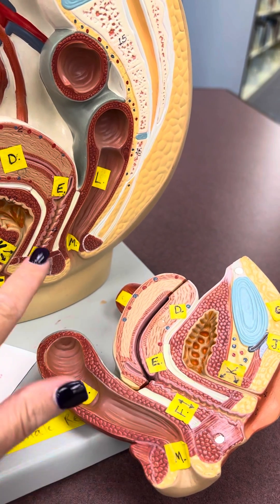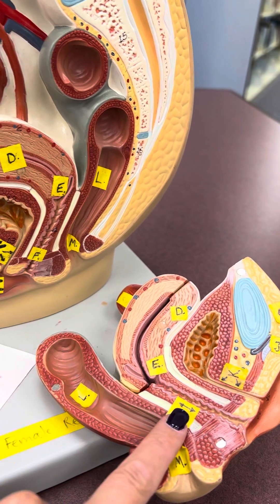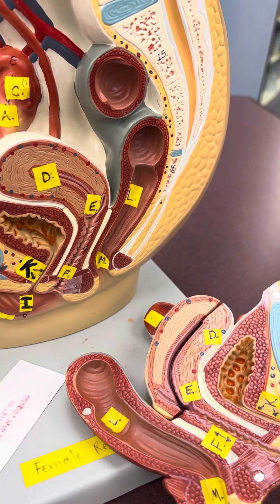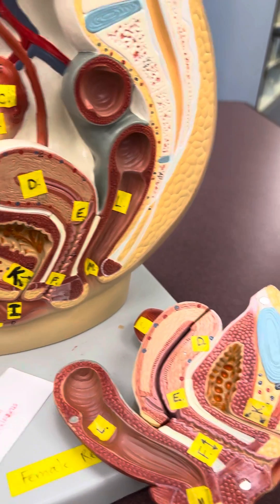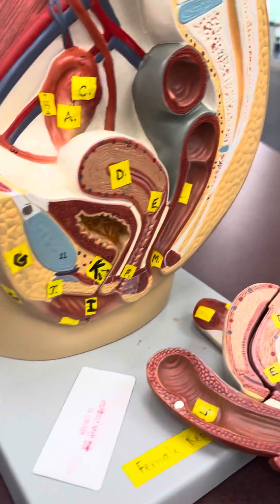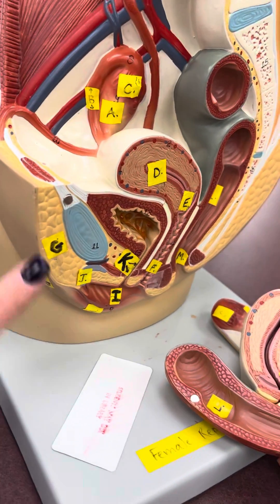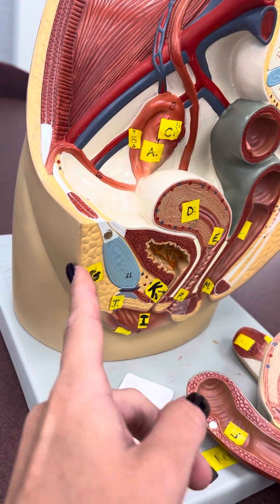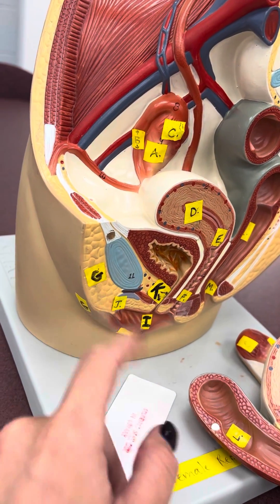F, on both sides here, is going to be the vagina. G is a bit of an external structure — it's this fatty body here. This is the mons pubis.